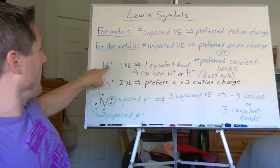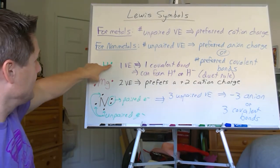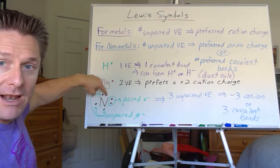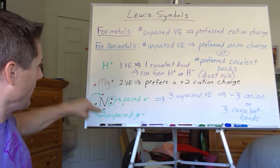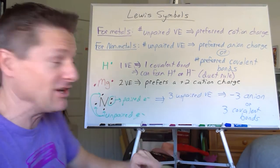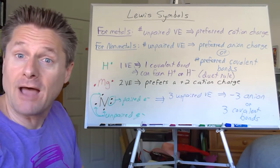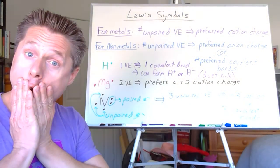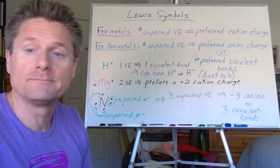If I take hydrogen with its one electron and stick it to one unpaired electron of nitrogen, then another hydrogen to another unpaired electron, and another hydrogen to the third unpaired electron — the nitrogen wants to react with three hydrogens to complete its octet. Let's do that on the next board.